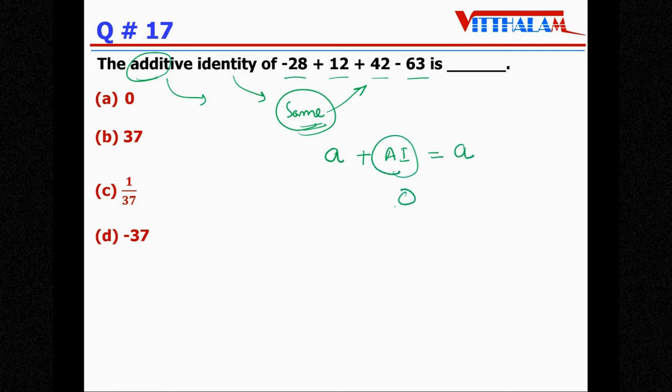Say a is the number, if we add some additive identity we should get the answer a, so additive identity is zero that's what we know and multiplicative identity is one. So whether it's a number of terms separated by some plus or minus sign, the ultimately final answer will be some number and when we add zero in that the answer will be the same number, therefore additive identity is zero so answer is a.